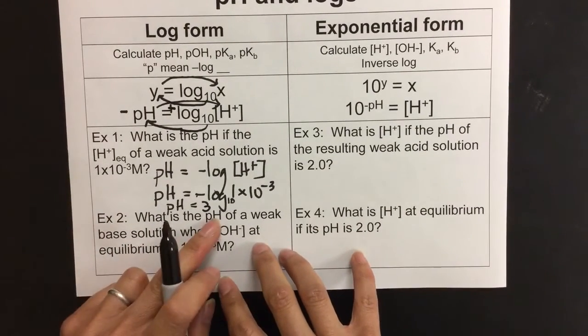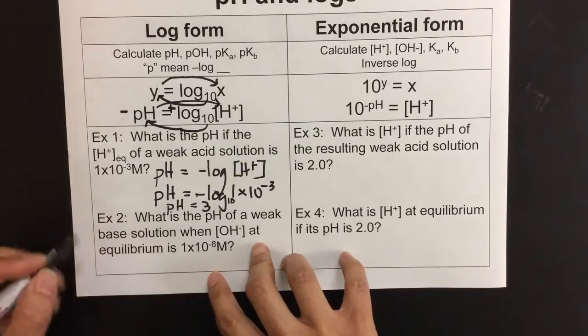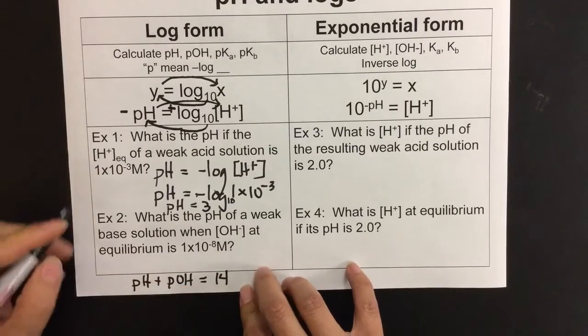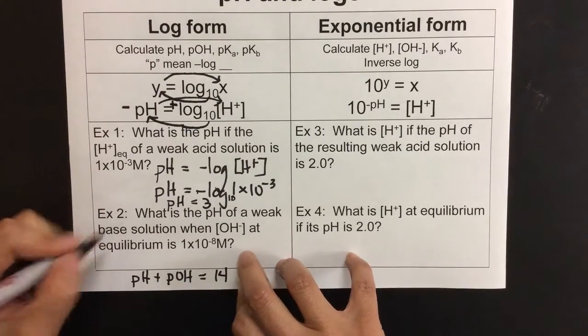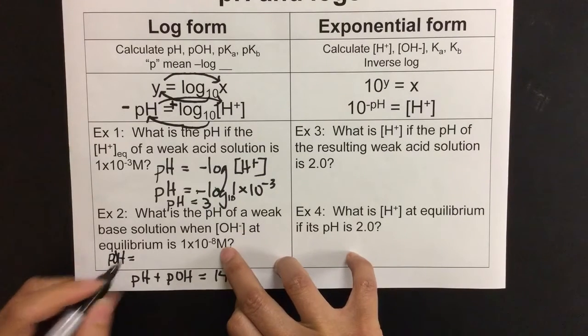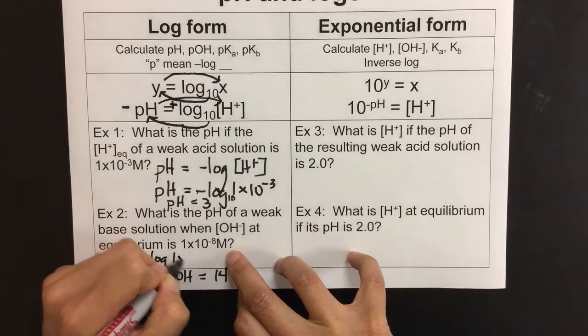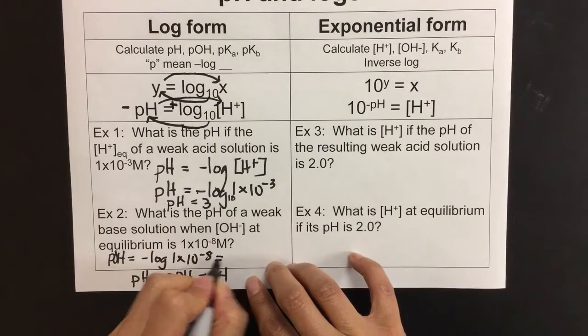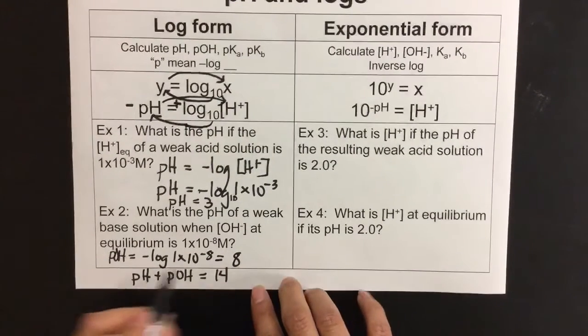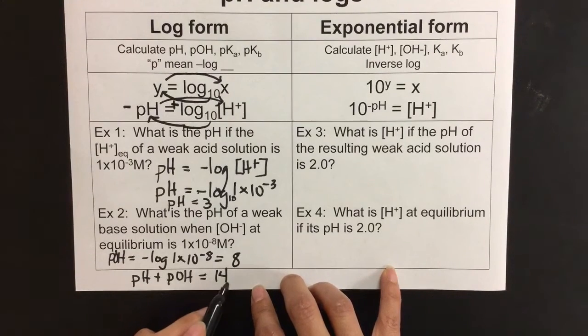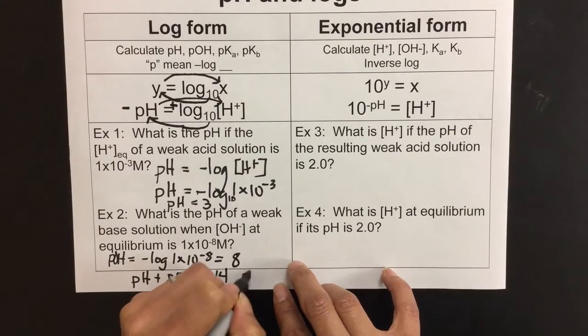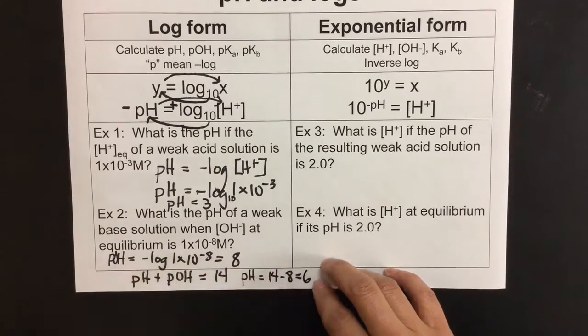In example 2, we're finding pH given the OH concentration. One of the relationships that I understand is pH plus pOH always adds up to 14. We take pH equals negative log of H+ concentration, but instead we're really doing pOH because we're given the OH concentration. So negative log 1×10⁻⁸ gives you 8. This gives you a value of 8. It's an exponential function, so you're really looking at the exponent, but the negative of that exponent is 8. If this is pOH, and pH and pOH has to add up to 14, pH must be solved by taking 14 minus the 8, so pH equals 14 minus 8, which is 6.